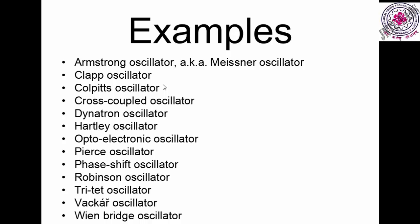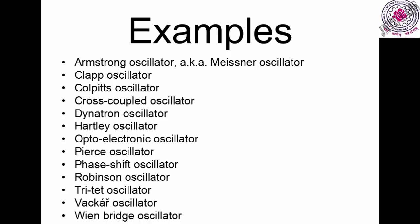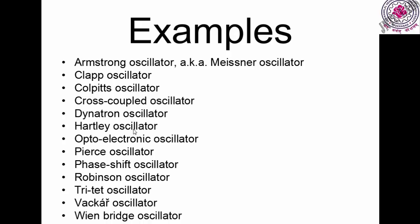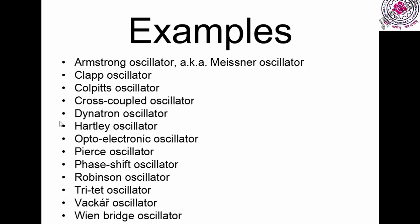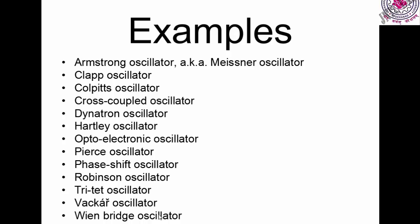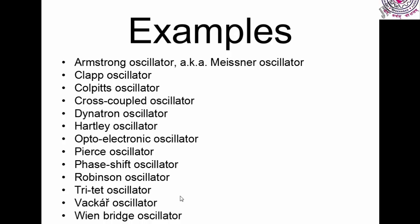Some examples of oscillators are: Armstrong oscillator, Clapp oscillator, Colpitts oscillator, cross-coupled oscillator, Hartley oscillator, phase shift oscillator, Robinson oscillator, Wien bridge oscillator, and Vackar oscillator. You will be learning approximately five to six of these oscillators in your academics, so you can mention those as examples.